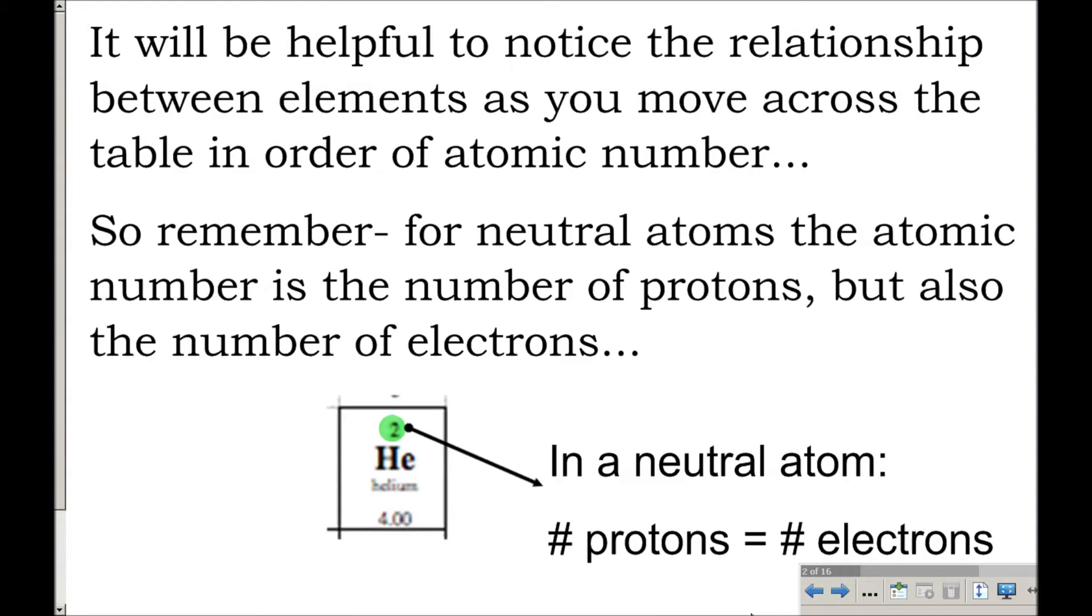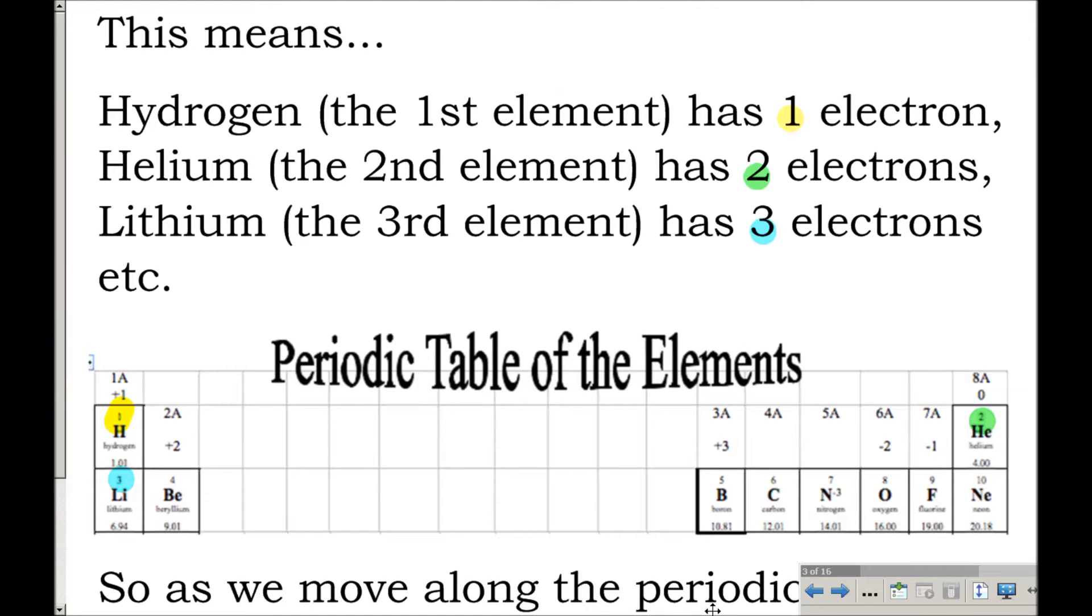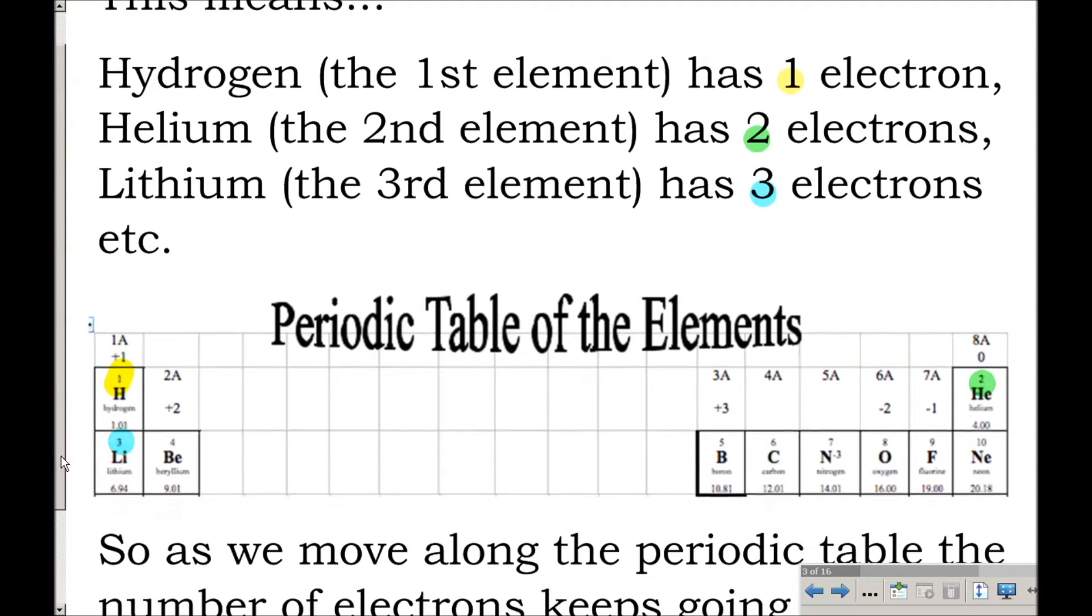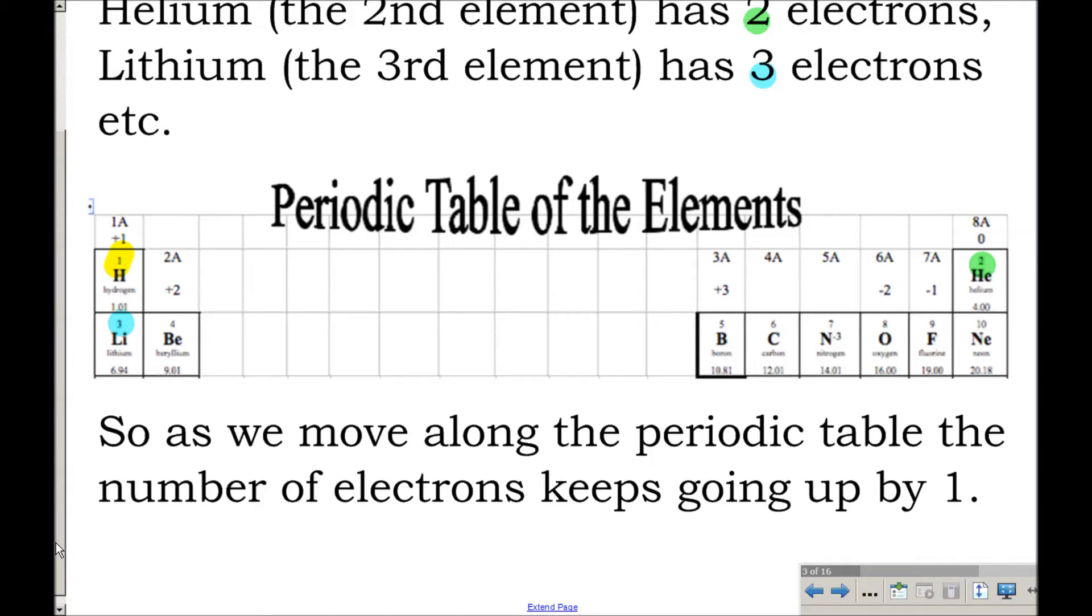It is going to be helpful to notice, as we're doing this, the relationship between elements as you move across the periodic table in order of atomic number. So I want you to remember that for neutral atoms, the atomic number, that's the smaller number on the periodic table, is the number of protons, but also, since these are neutral atoms, it's the number of electrons. So what this means is that hydrogen, the first element, has one electron, and helium, the second element, has two electrons, and lithium, the third element, has three electrons, and so on and so forth. In other words, as we move along the periodic table, the number of electrons keeps going up by one.